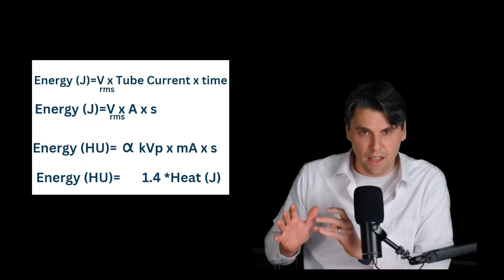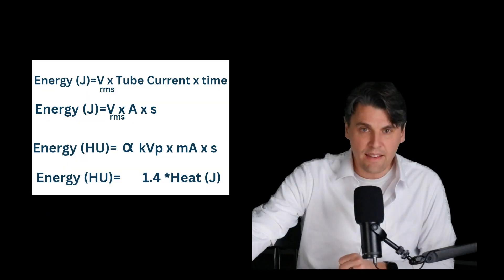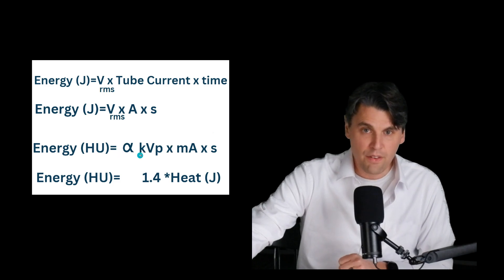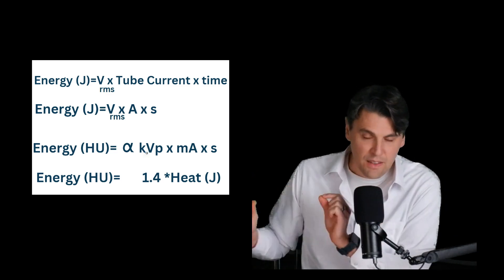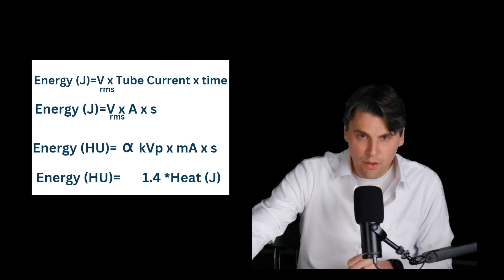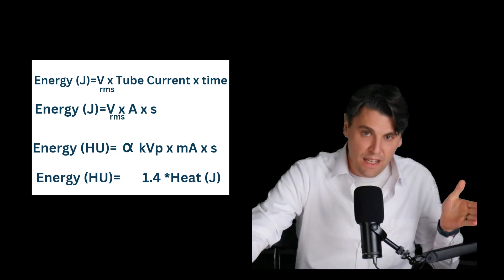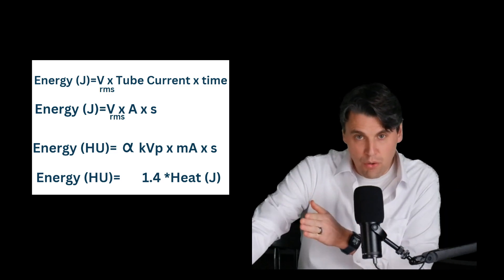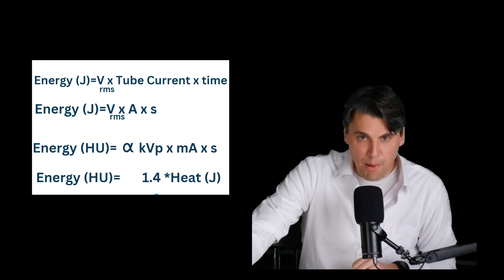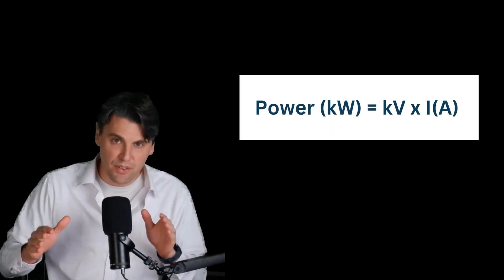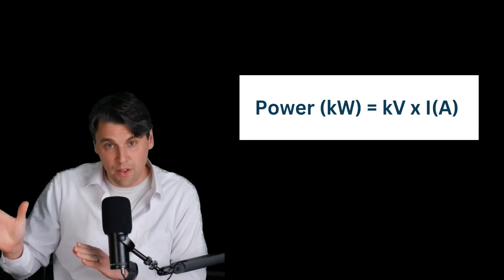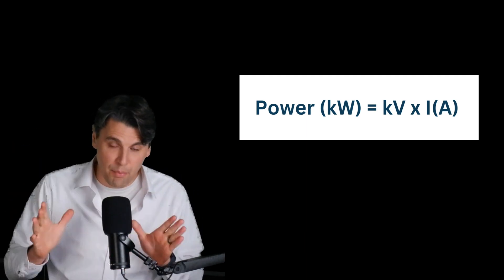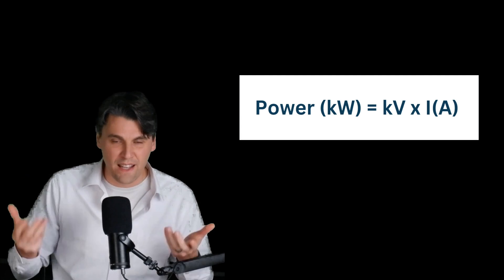To convert between these two units, for the case of a perfect, nice flat KVP, the factor is basically 1.4. So the conversion from energy in heat units to energy in joules is to multiply by 1.4. Power is just that energy divided by the time — kilovolts times the current gives you the power in kilowatts.